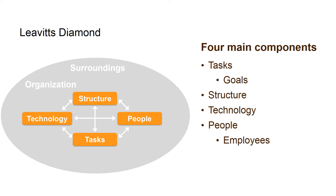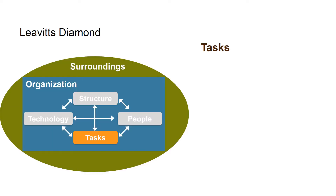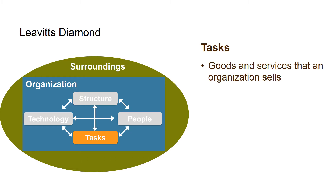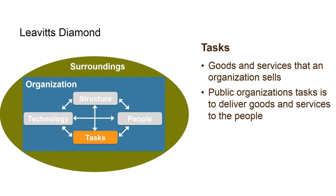Tasks: In most cases, it's about the goods and services that an organization sells. There are exceptions — public organizations do not live by selling goods and services. Their task is to deliver goods and services to the people, and for that purpose we are paying taxes.